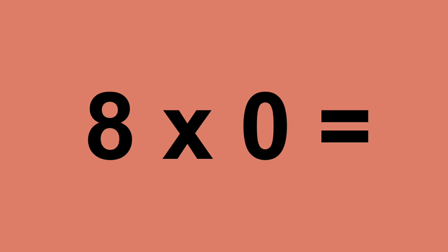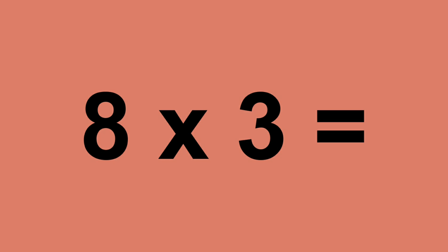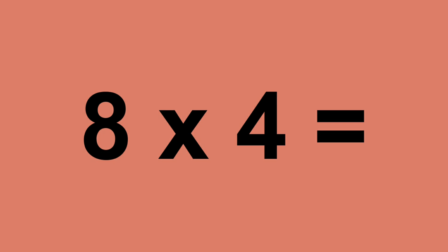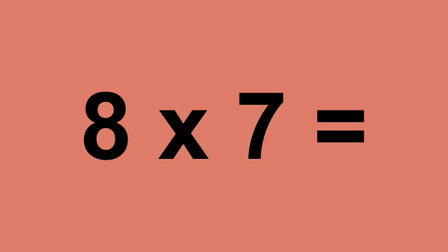Eight times zero equals zero. Eight times one equals eight. Eight times two equals sixteen. Eight times three equals twenty-four. Eight times four equals thirty-two. Eight times five equals forty. Eight times six equals forty-eight. Eight times seven equals fifty-six. Eight times eight equals sixty-four.